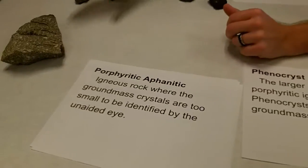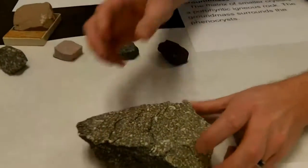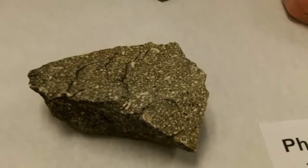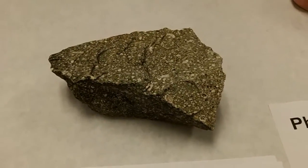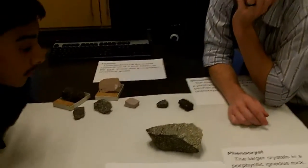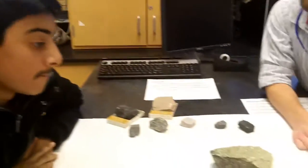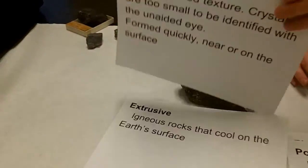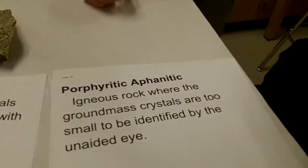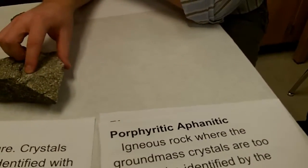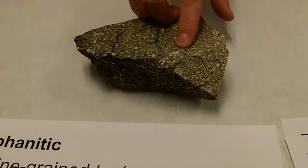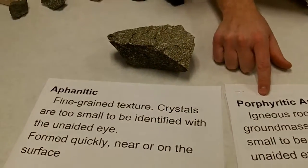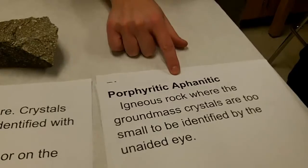Let's look at this next rock. It's a bunch of different colors — dark, with some green and white spots. Are they all the same size or different sizes? Different sizes. So does that make it porphyritic aphanitic, or just aphanitic? Porphyritic aphanitic! We've got the phenocrysts and the green ground mass where we can't see the crystals. That makes it porphyritic because it's got two sizes, and aphanitic because that ground mass — you can't see it.